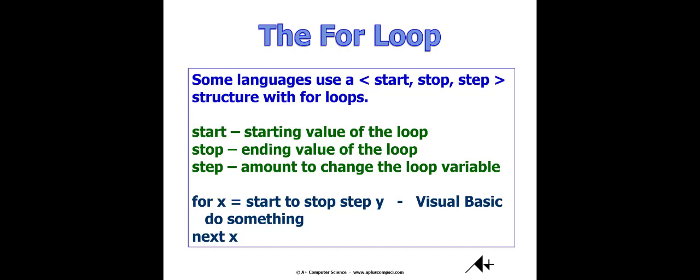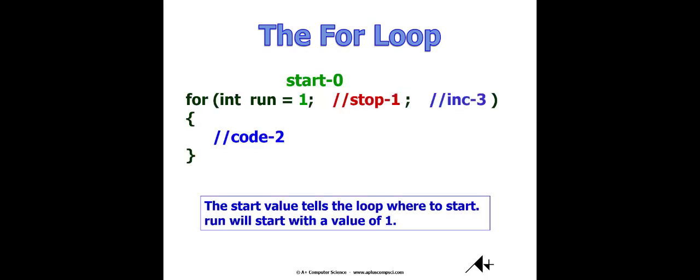In some languages they're set up with a defined start value, stop value, and step — like your increment. Visual Basic does that; it had a really nice setup on the loop which was easy to follow, and Java does the same thing. Here's another example where I've taken everything out except the start so we can look at it independently. I've got int run equals 1 — that is my starting value. Run gets defined and set to 1 one time, so that's your pre-loop initialization.